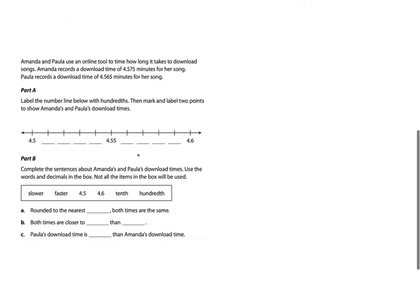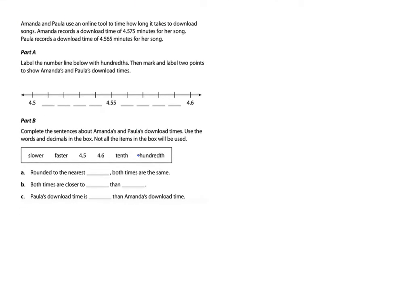Now let's move on to the final question — a lot of you guys struggled with this. Amanda and Paul use an online tool to time how long it takes to download songs. Amanda records a download time of 4 and 575 thousandths minutes. Paula records a download time of 4 and 565 thousandths of a minute. Label the number line below with hundredths, then mark and label two points to show Amanda's and Paula's download times. The first thing I have to do is label the number line.